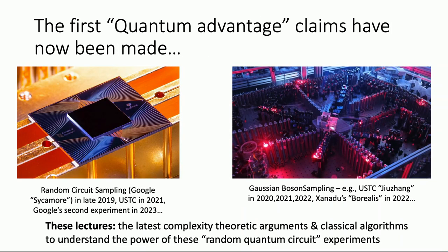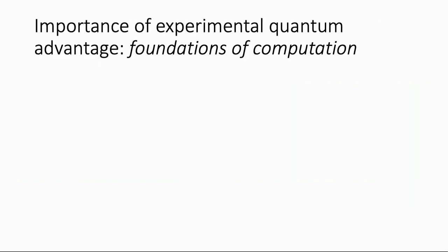Both the random circuit experiments and Gaussian boson sampling experiments are very different from an experimental point of view. But fundamentally, these are just two different special cases of what we call random quantum circuit sampling. They have a lot of theoretical similarities in the theory we use to analyze these experiments, even though the experiments themselves are quite different.